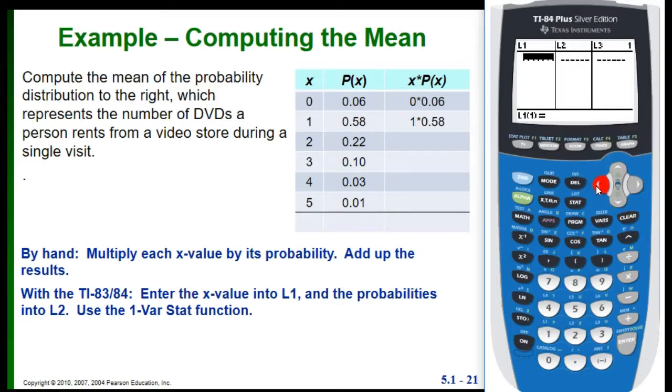Now we want to go back and enter the Xs and the probabilities into the two lists. We're going to put the Xs into list 1 and the probabilities into list 2. So I'm already here in list 1, so I'm just going to start entering my numbers. We're going all the way from 0 up to 5 for the Xs. And then I'm going to arrow over to my list 2, and now I'm going to put in all the probabilities. Now when I have all those in there, what I want to do to find the mean and even the standard deviation for this probability distribution is I want to go back to my stat.